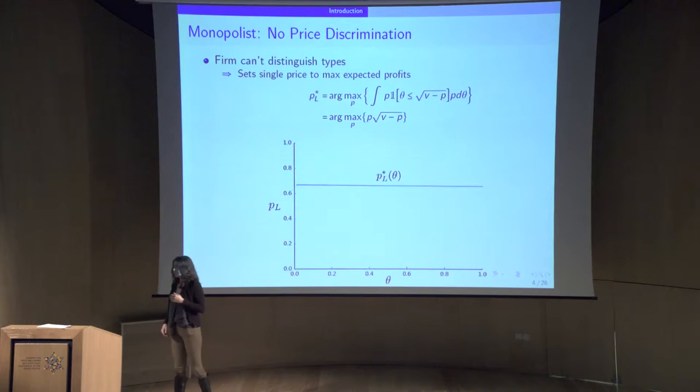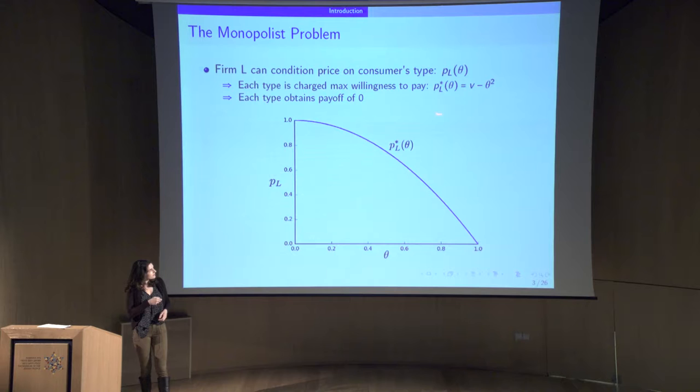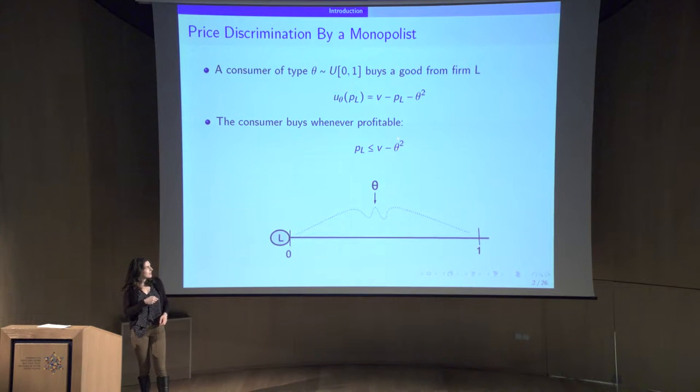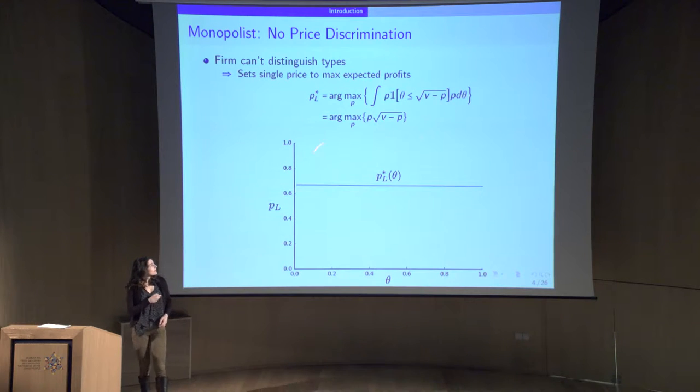What about if the gym doesn't know where I am? Well, the gym knows that I'm located somewhere on the unit line. The best that it can do, and this ties into some of the auction results we saw earlier, is to maximize over the price that it can charge to get, on average, the highest possible rent out of me. If my type theta is anything less than the square root of V minus P, then I'm going to buy a membership. The gym is going to maximize over the price times the probability that I'll buy a membership, and it'll set some price.